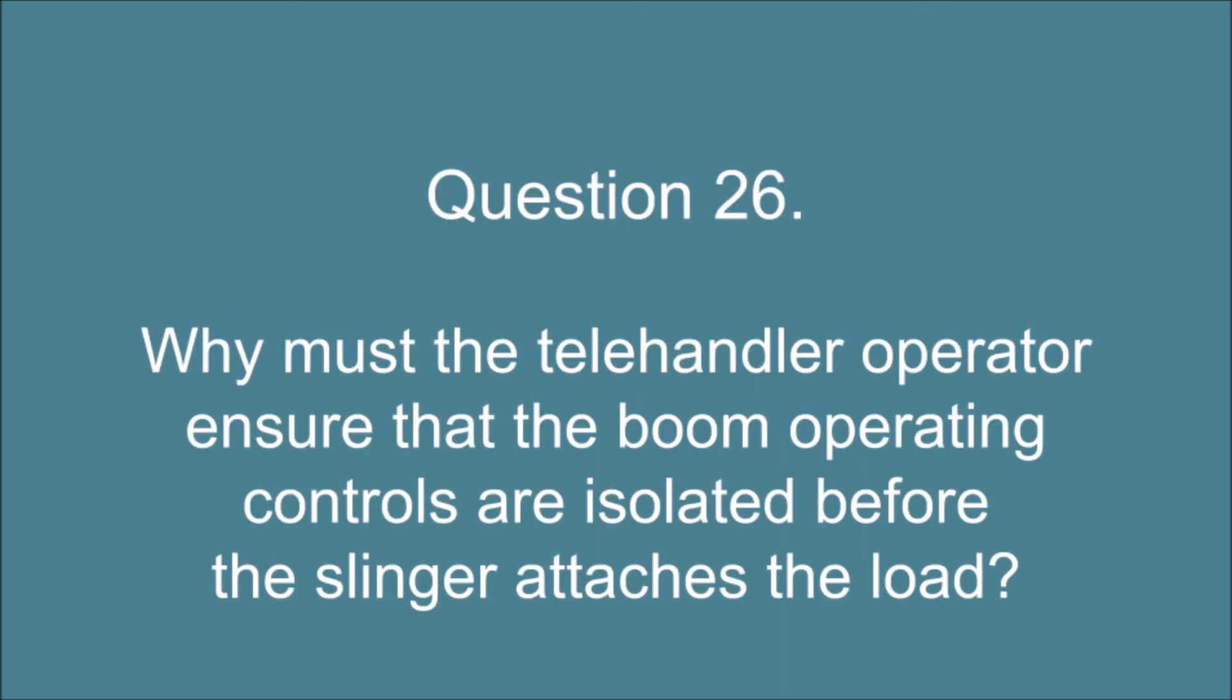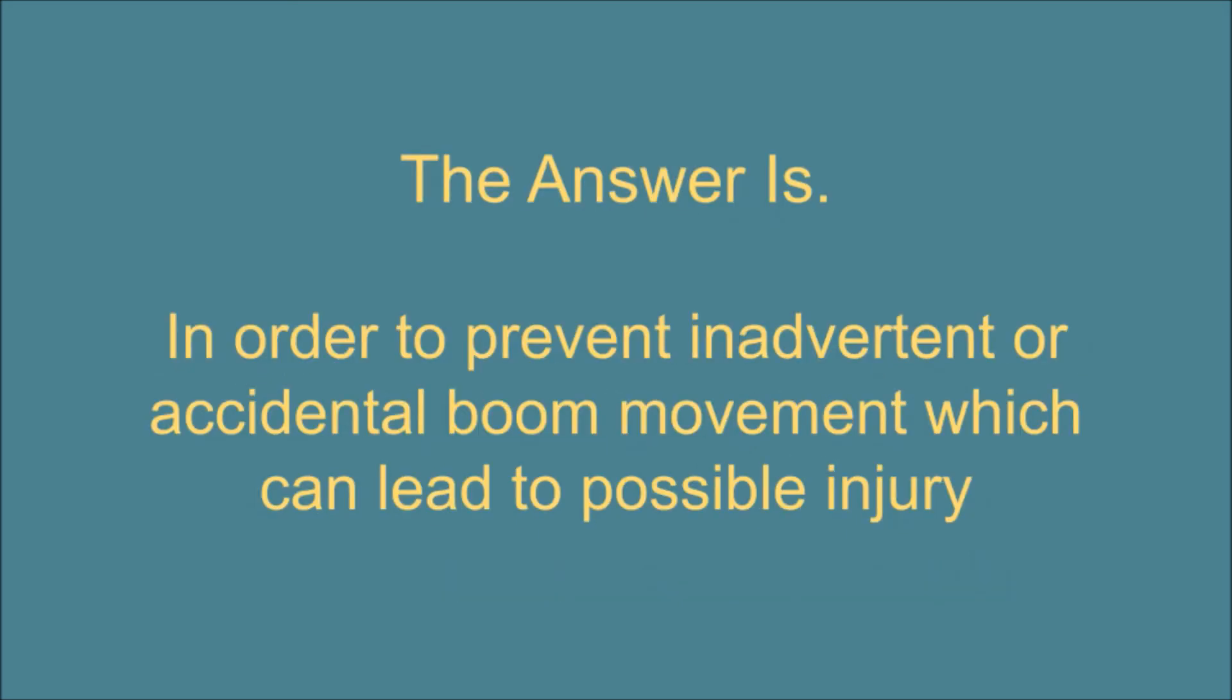Question 26. Why must the telehandler operator ensure that the boom operating controls are isolated before the slinger attaches the load? The answer is: In order to prevent inadvertent or accidental boom movement which can lead to possible injury.